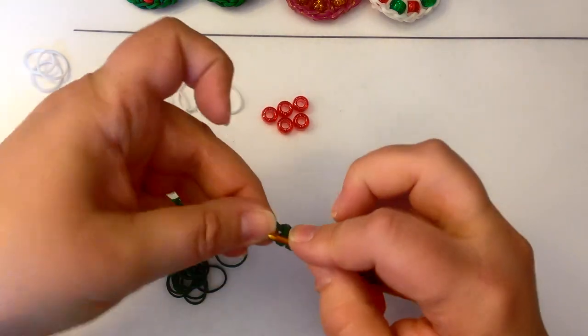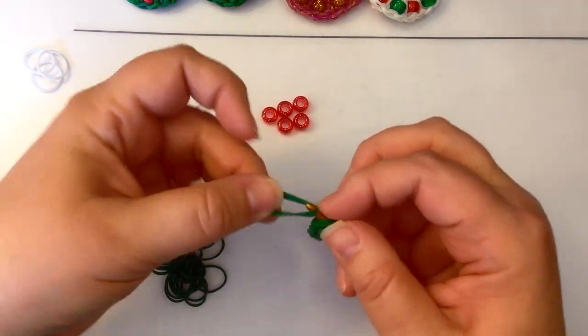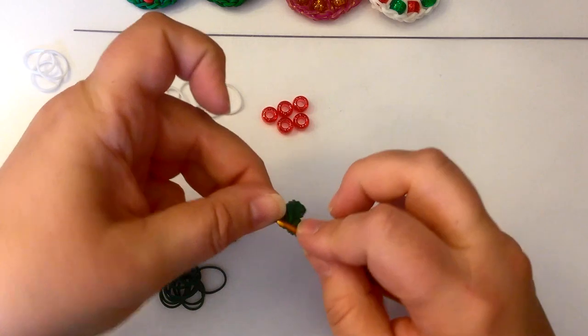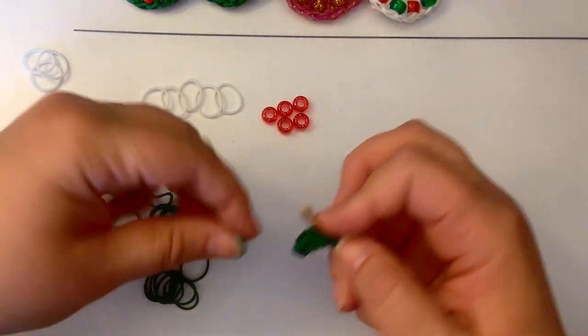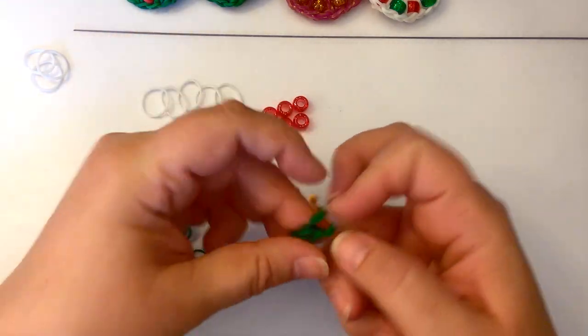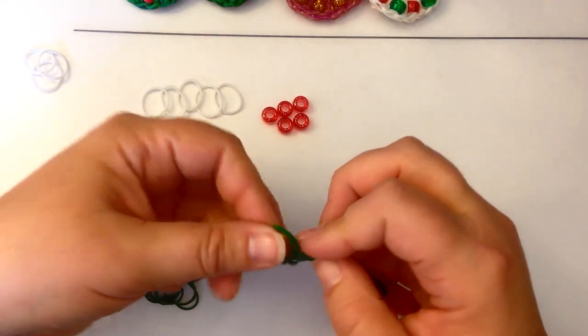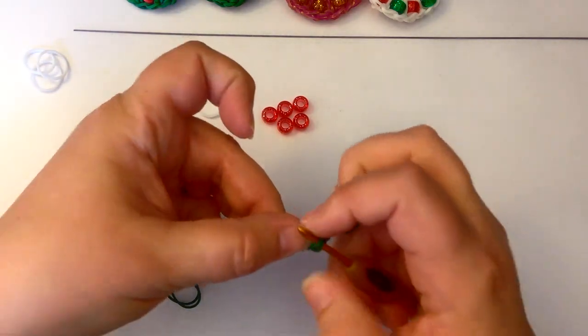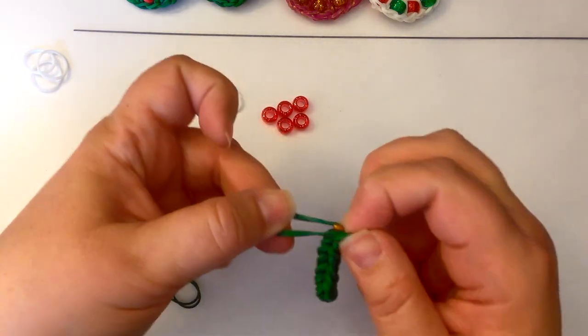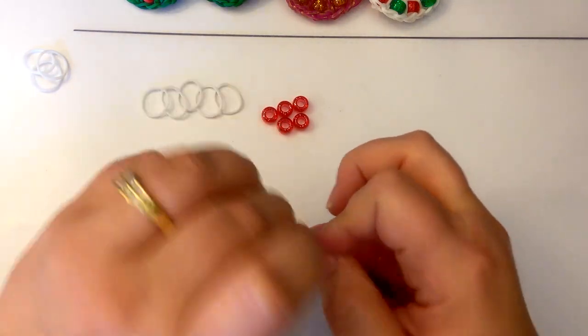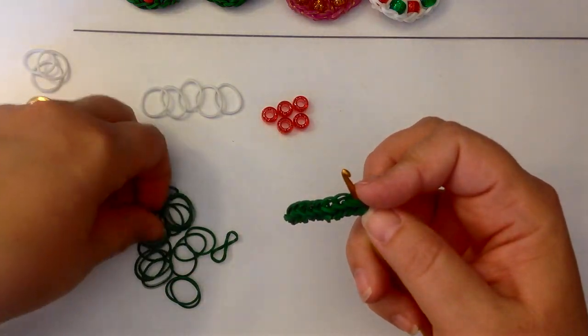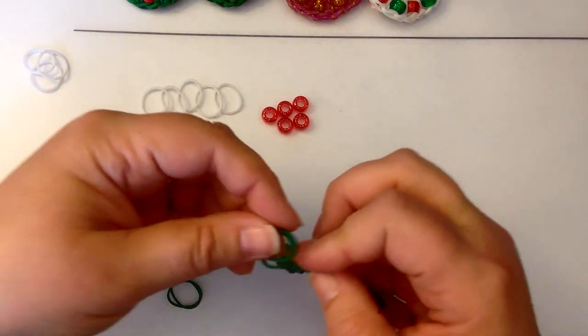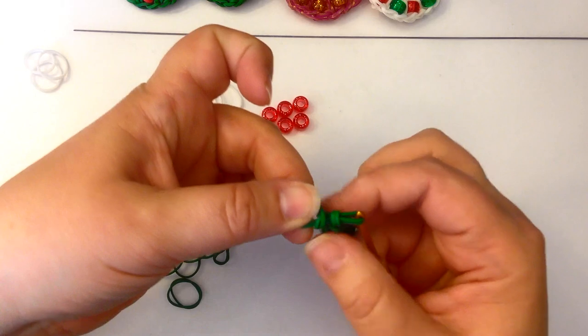We're going to start by double banding and you're going to slide your little end cap onto two bands and reclaim. We're going to do this ten times. So that's our first, second, third, fourth, fifth, six, seven, eight, nine, and ten. We are not going to reclaim. We're just going to push it over like that.